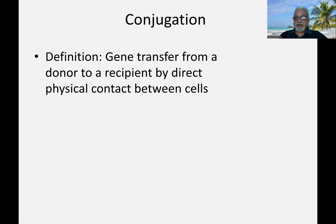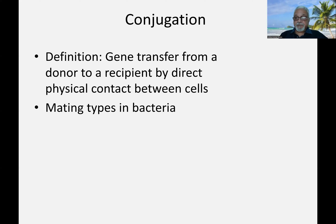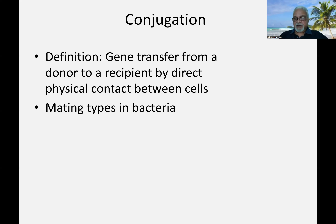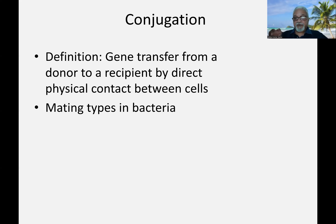Once the DNA is transferred, it recombines with the host chromosome of the recipient cell. In this sense, these cells are mating types. There are two types: one we call donor, which donates the DNA, and the other is the recipient cell which receives the DNA. A donor cell will always remain a donor cell and the recipient cell will always remain a recipient cell.